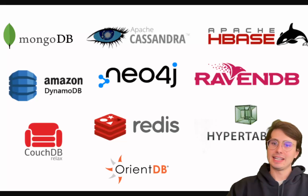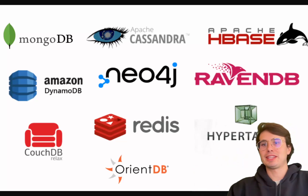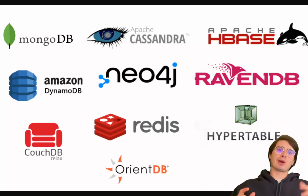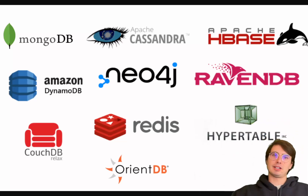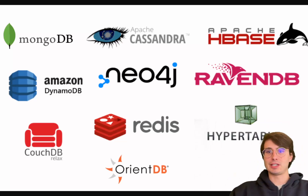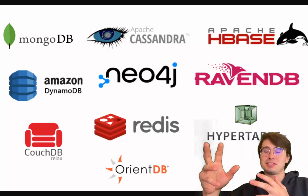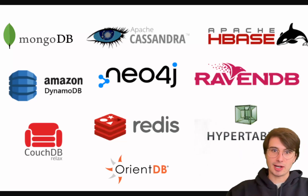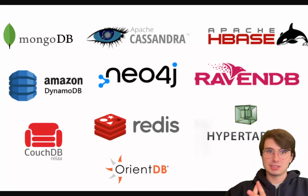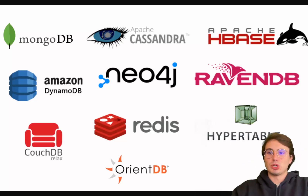Hey everyone, Data Guy here. Today I want to do a focused comparison video on some of the most popular NoSQL databases out there. There are a ton of NoSQL databases — as you can see in this graphic — but the ones I want to specifically talk about today are MongoDB, Apache Cassandra, and Redis, because I think those give you the different flavors of NoSQL databases pretty well.